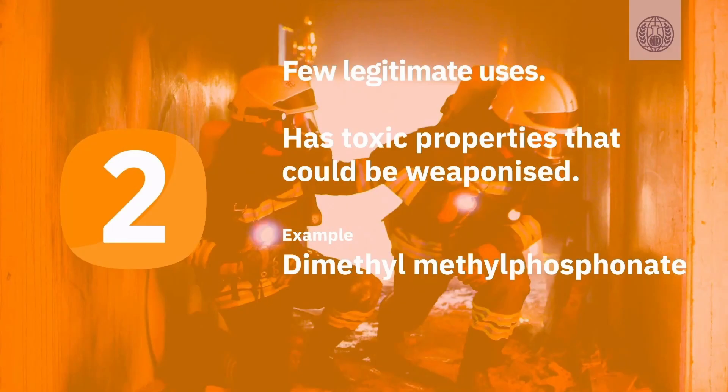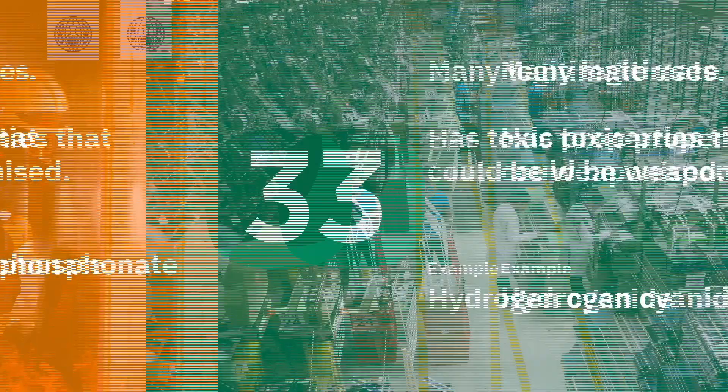Schedule 2 chemicals have a few allowed uses and can be used as a chemical weapon or as a precursor to one. Dimethylmethylphosphonate is a Schedule 2 chemical that is used as a flame retardant, but is also a precursor for the deadly nerve agent Soman.